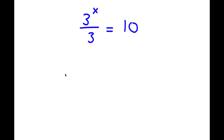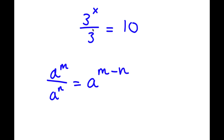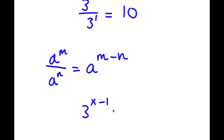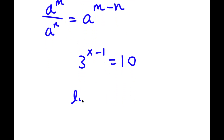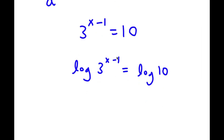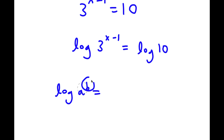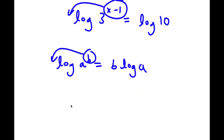If I have something in the form a to the power of m over a to the power of n, this equals a to the power of m minus n. So here, 3 to the power of x over 3 — since 3 is the same as 3 to the power of 1 — gives me 3 to the power of x minus 1 equals 10. To solve this, I'll take the log on both sides: log of 3 to the power of x minus 1 equals log 10. Since log a to the power of b equals b times log a, I can move x minus 1 to the front: x minus 1 times log 3 equals log 10.